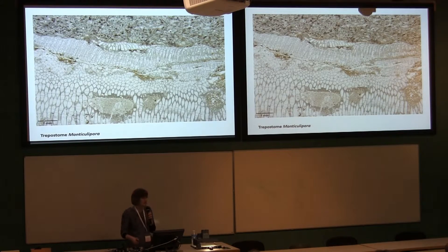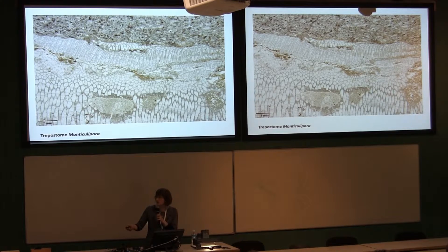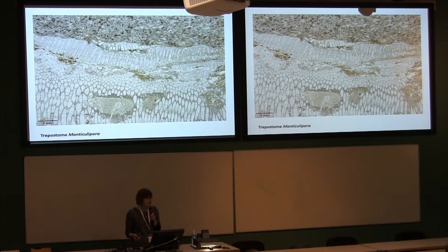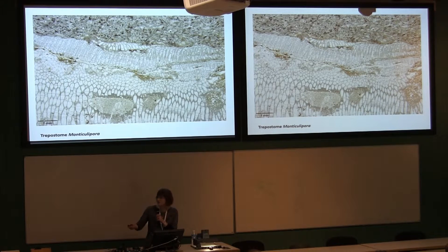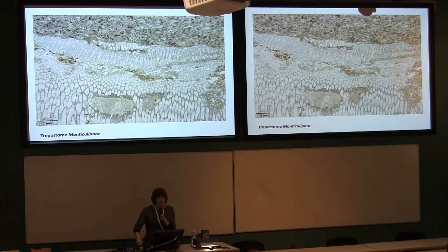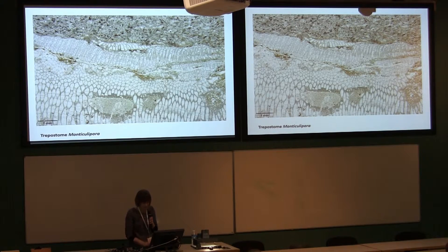There were two examples where we saw two other trepistones. This one is a monticulipara, and in both cases they were overgrown by stigmatella — these large domic structures. You can tell this one's different because it has smaller polymorphs and these cystose diaphragms running all the way down the autozoecial tubes.